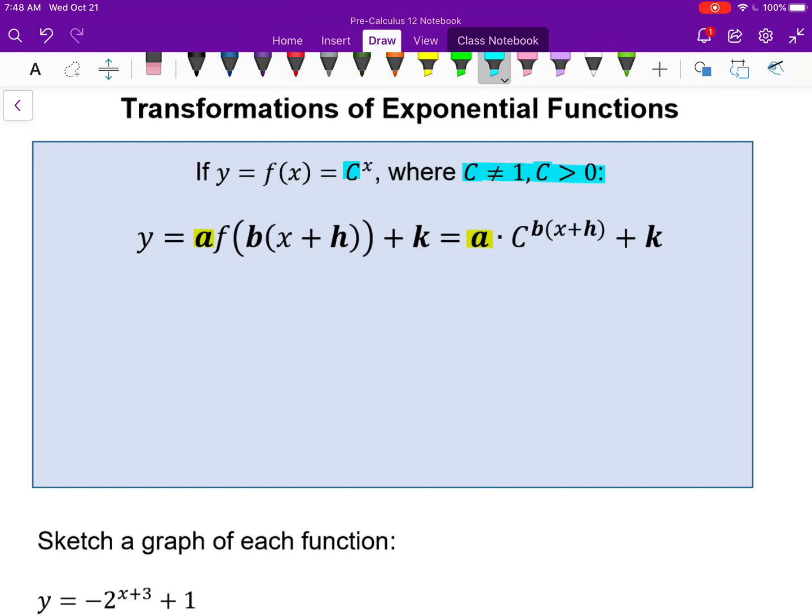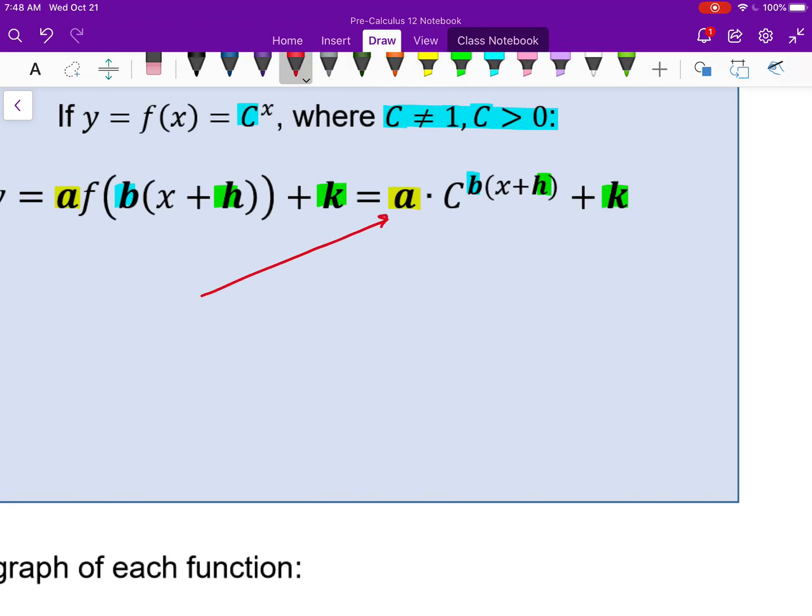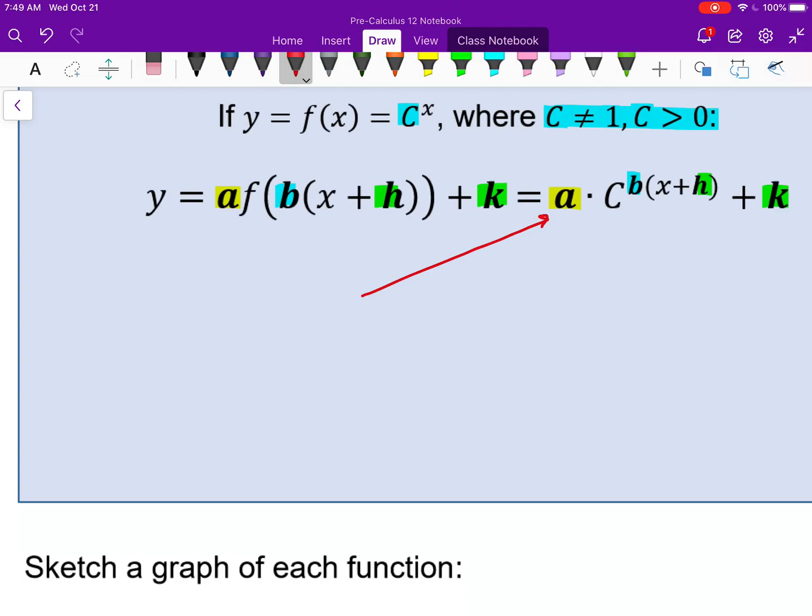And so that a value, the b value, the h, and the k, whatever those are, we can see all those transformations. And I'm most interested in what we see from right here. So the a value, again, is our vertical stretch by a scale factor of a, and if a is negative, it's also a reflection, vertical reflection.